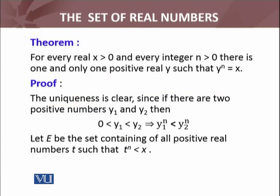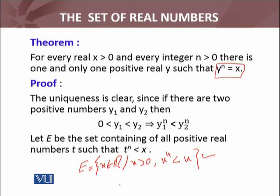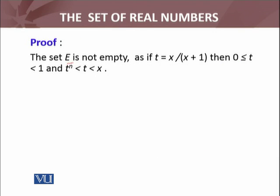Let E be the set consisting of all positive real numbers t such that t^n < x. In set builder notation, this is {t ∈ ℝ : t > 0 and t^n < x}. The set E is not empty. Why? One reason is if we take t = x/(x+1), what about that number?